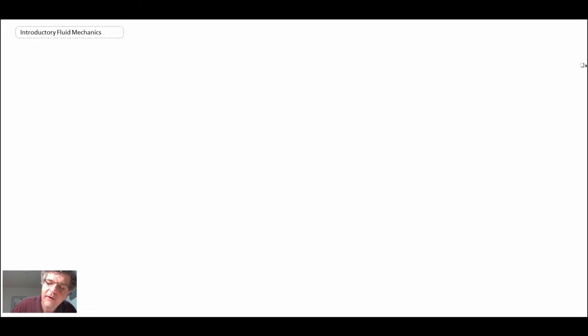When we look at duct flows or pipe flows, if you were to plot pressure drop in a standard pipe as a function of the velocity of the fluid going through it, you would find that in this part is laminar, and this part here is turbulent, and this would be transitional.